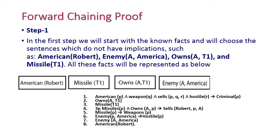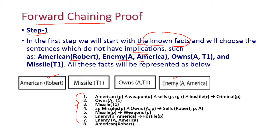Now let us start the forward chaining proof. In the first step, we start from the known facts. We choose sentences which do not have implications. The known facts are: American(Robert), enemy(A, America), owns(A, T1), and missile(T1).